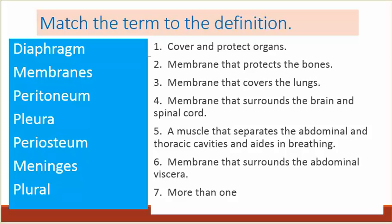Number one: covers and protects organs. Number two: membranes that protect bones. Number three: membrane that covers the lungs. Number four: membrane that surrounds the brain and spinal cord. Number five: a muscle that separates the abdominal and thoracic cavities and aids in breathing. Number six: membrane that surrounds the abdominal viscera. Number seven: more than one.